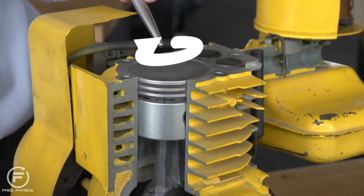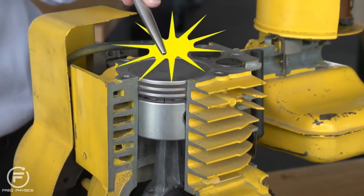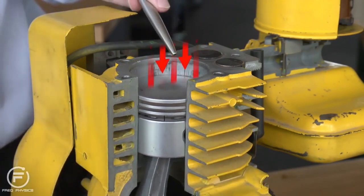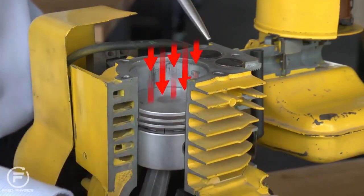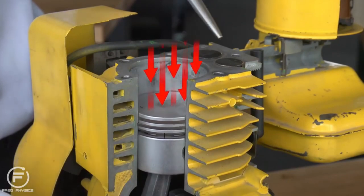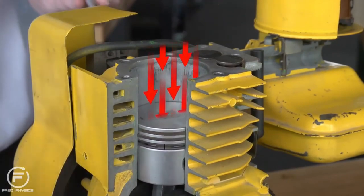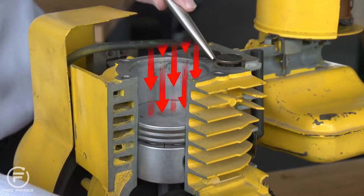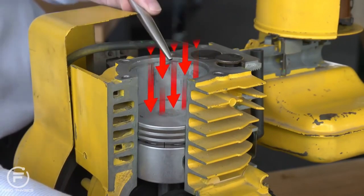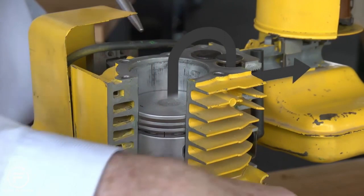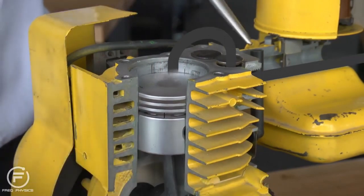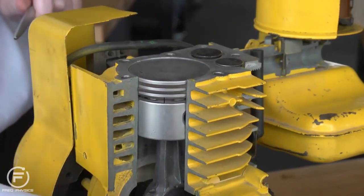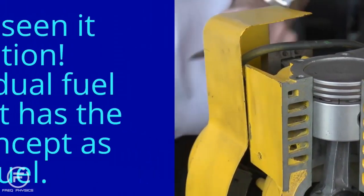The piston travels up and compresses the air-fuel mixture in the second stroke. At the end of the second stroke, the spark plug fires, igniting the air-fuel mixture, which drives the piston down. This is the power stroke. Both the inlet valve and the exhaust valve are closed. At the bottom of the stroke, the exhaust valve starts to open and we get the final stroke — the exhaust stroke — where the air-fuel mixture is expelled out through the exhaust system. Then we're ready for the next intake stroke.